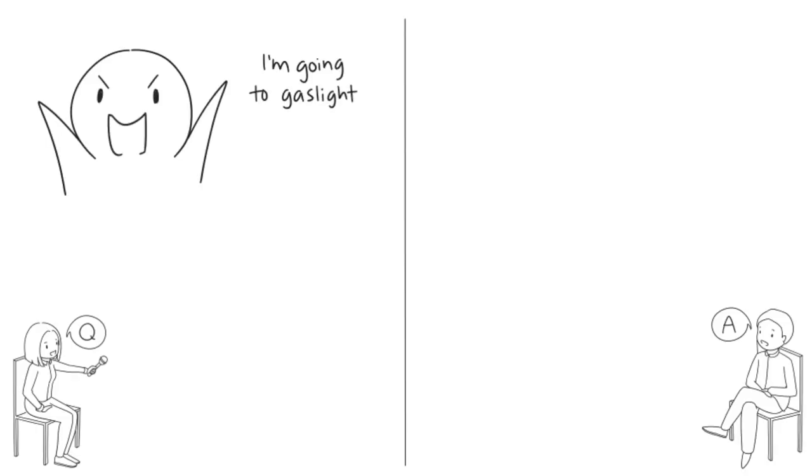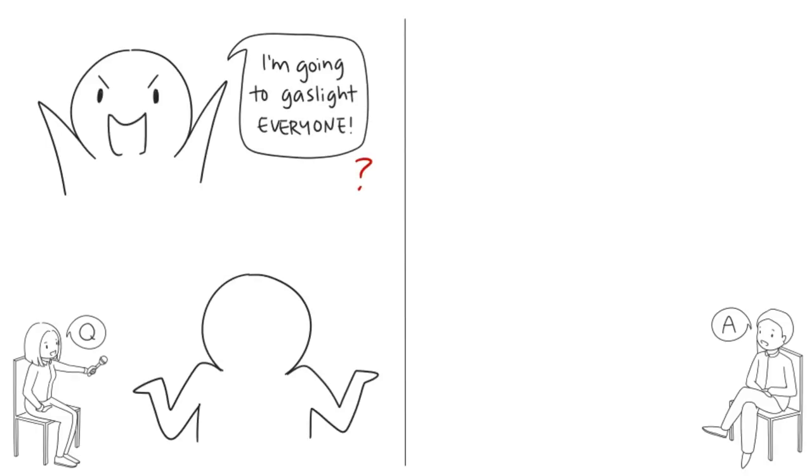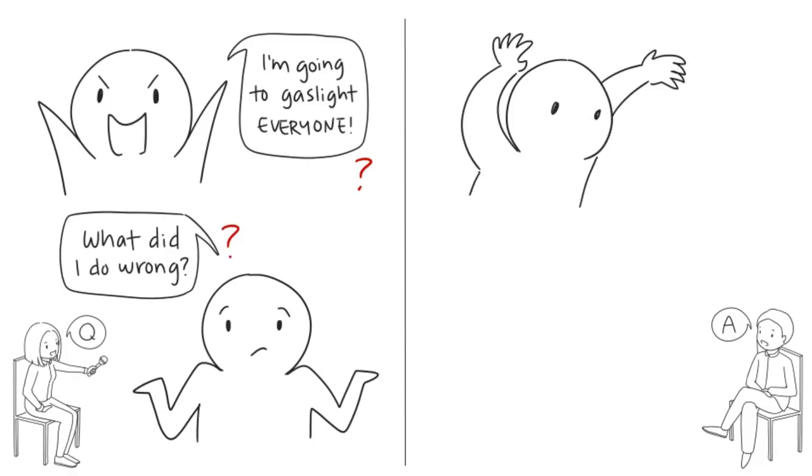Are gaslighters always cognizant of what they're doing? Or is it possible that one can gaslight others unconsciously? Many gaslighters purposely want to dominate and control an individual or a group. That said, there are other times when a gaslighter is unaware of his or her destructive behavior.